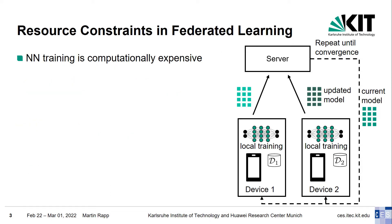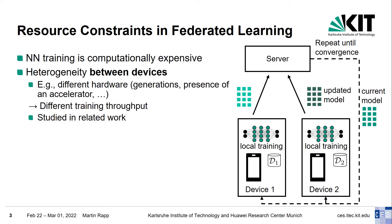Training of a neural network is a resource-hungry task. It is unrealistic to assume that all devices have the same computational resources for training. In particular, there is heterogeneity between devices — for instance because different devices have different hardware, which happens if different generations of devices cooperate, or if some devices have a neural network accelerator, or if different devices have different power budgets. This leads to a different per-device training throughput.